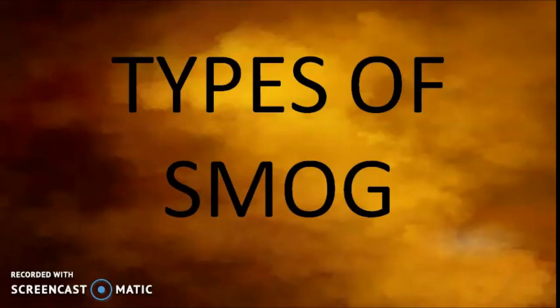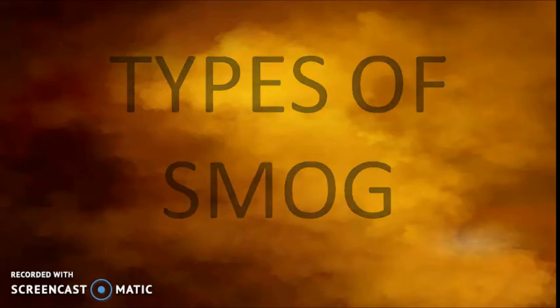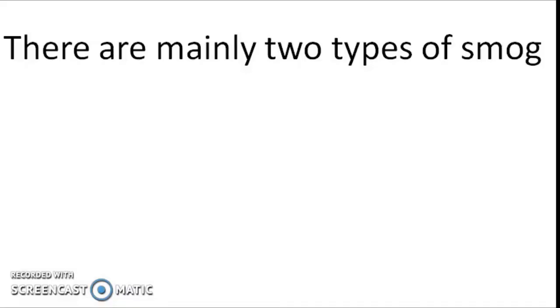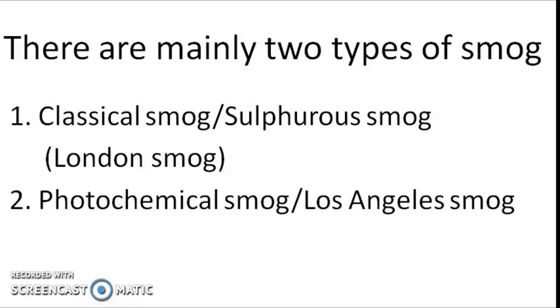In this presentation, we shall discuss the different types of smog. There are basically two types: number one, the London smog, also called classical smog or sulphurous smog; and number two, the Los Angeles smog or photochemical smog.